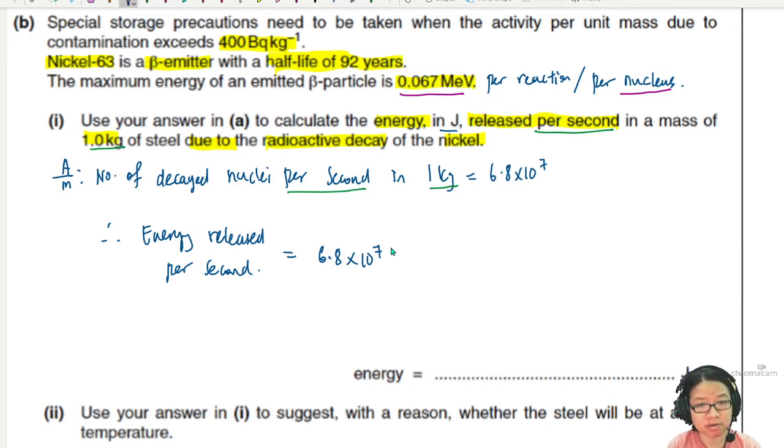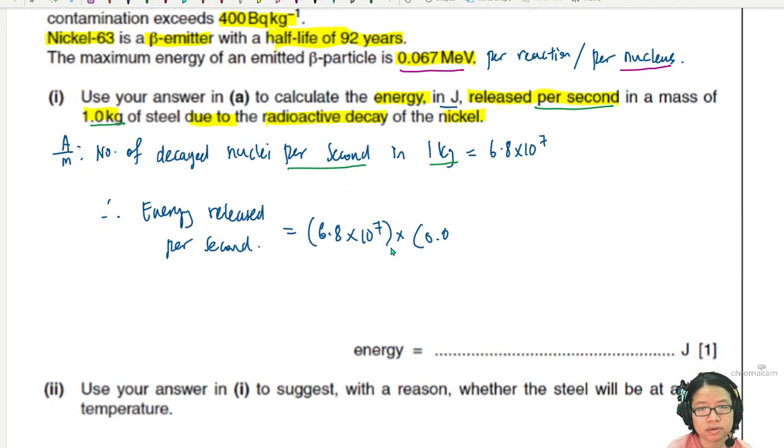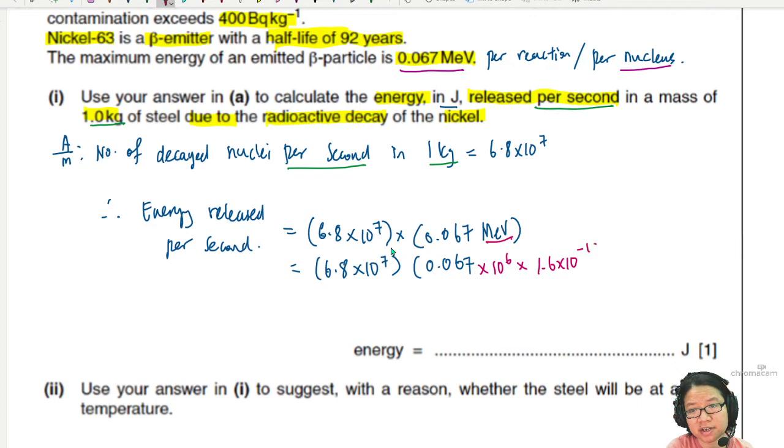Good stuff. So 6.8 times 10 to the power of 7. And then this thing will multiply by 0.067 mega eV. So mega eV needs to be converted to joule, which I think is also what this question is testing you for. 0.067. And mega eV is 10 to the power of 6. E-volt is times 1.6 times 10 to the power of negative 19. This eV is this much joule.